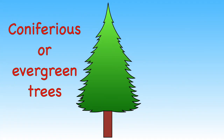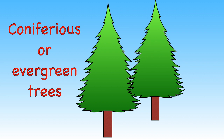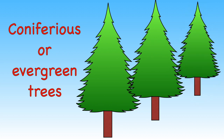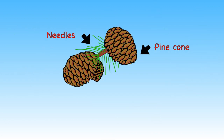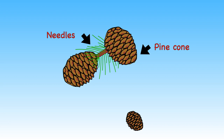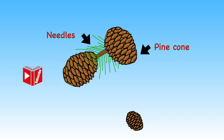Coniferous trees are also known as evergreen trees because their leaves or needles stay on all year round. Dead needles will fall to the ground but the tree will always have leaves or needles — that's why it's called evergreen. Coniferous trees such as spruce, fir and pine all produce seeds in cones and have thin needle-like leaves, a little like a Christmas tree.